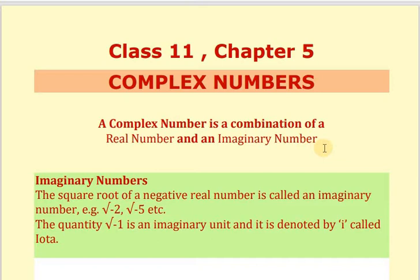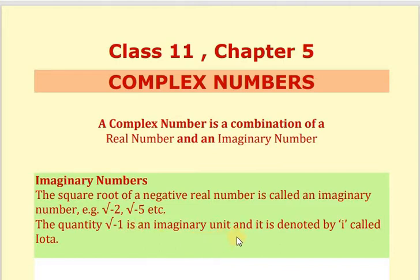Now, what is the meaning of imaginary number? The square root of a negative real number is called an imaginary number. Examples are square root of minus 2, square root of minus 5, etc. The quantity square root of minus 1 is an imaginary unit and it is denoted by i, called iota.